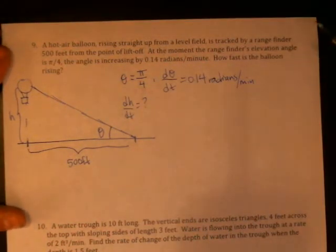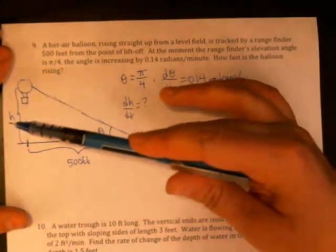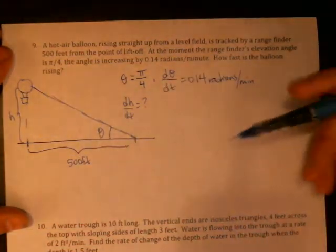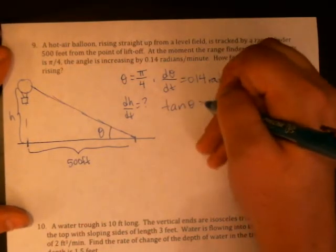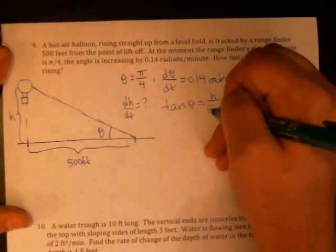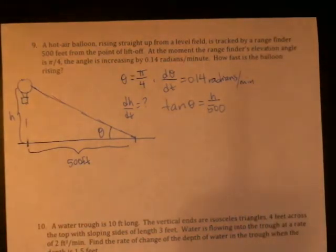Okay, so formula relating θ to h and 500, this is going to be a tangent. Tangent θ is h over 500. Okay, so we know a θ and a dθ/dt, so I am just fine with θs continuing to show up even after I take the derivative.